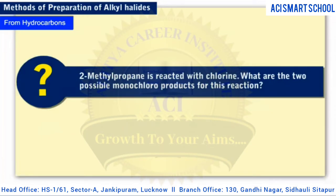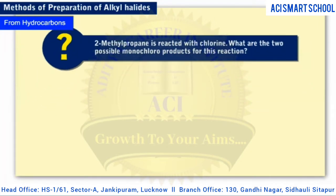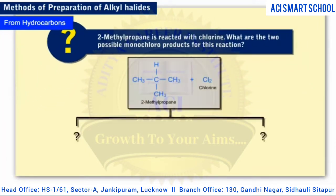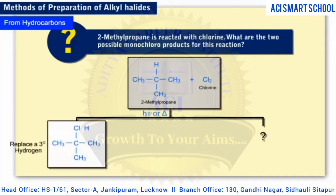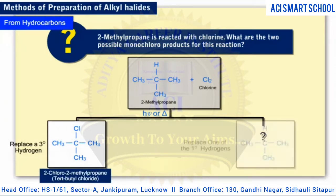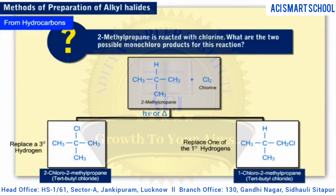Let's apply our knowledge. 2-methylpropane is reacted with chlorine. What are the two possible monochloroproducts? Note that in 2-methylpropane, we have a tertiary hydrogen as well as several equivalent primary hydrogens. Replacing the tertiary hydrogen produces 2-chloro-2-methylpropane, or tertiary butyl chloride. Replacing one of the primary hydrogens yields 1-chloro-2-methylpropane, or isobutyl chloride.